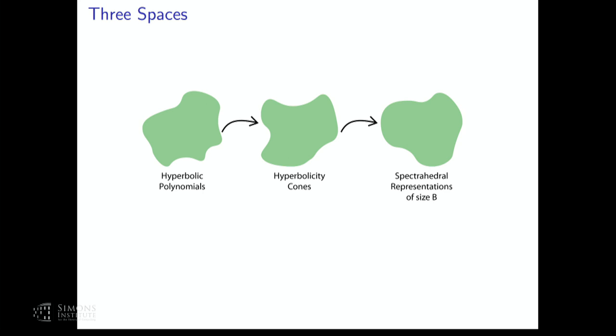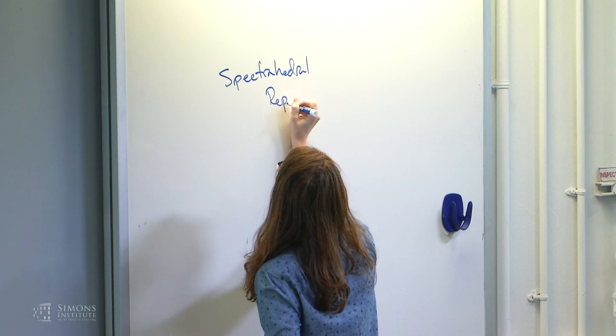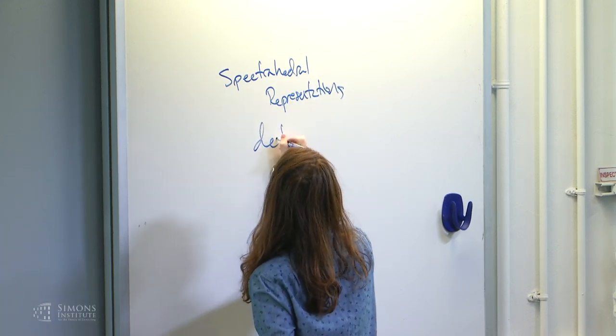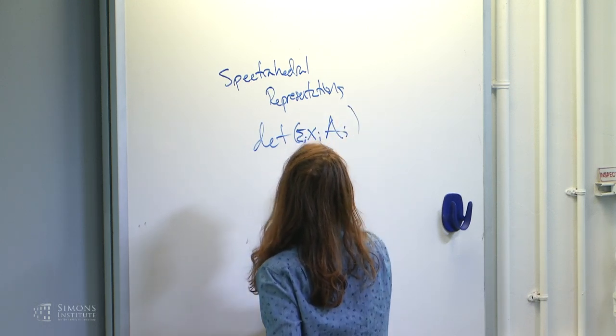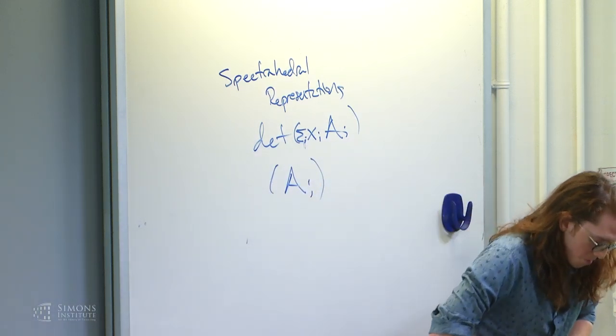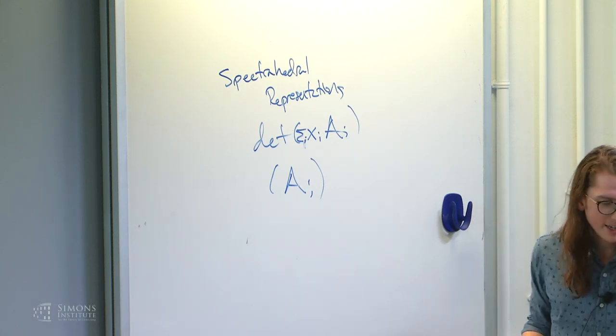The objects I'm interested in: I have my hyperbolic polynomials; associated to those, I have the geometric objects which are my hyperbolicity cones, open convex cones; and then associated to the hyperbolicity cones, I have spectrahedral representations, which I'm thinking of as tuples of matrices — specifically n-tuples of B-by-B symmetric matrices, where B is the eventual size of the spectrahedral representations.